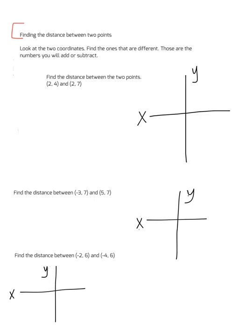So in this case, we have to find the distance between the two points. We have (2,4) and (2,7). If you notice, the 2s are the same. So we are going to look at the 4 and the 7, and both are in the y-coordinate. So we are looking at a vertical change — it's going to be going up and down.